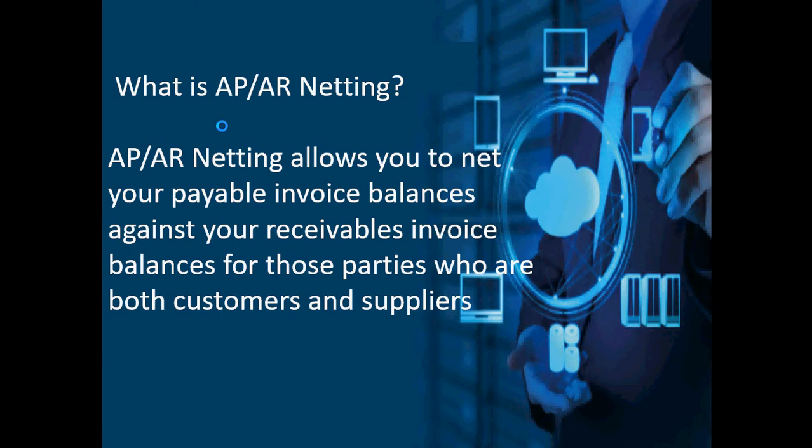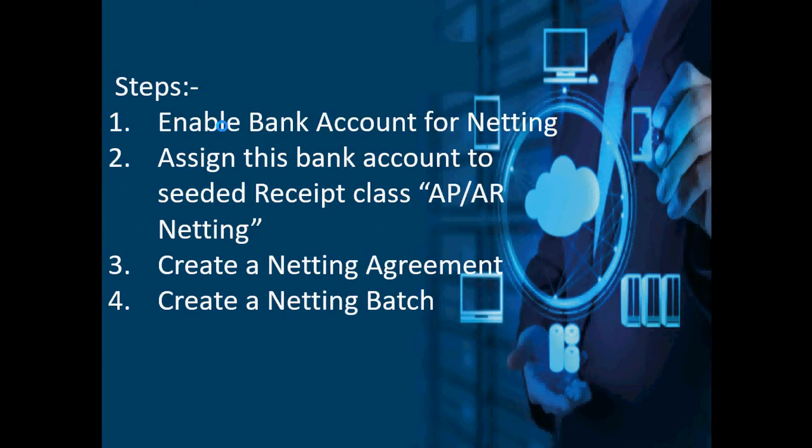There are a few steps involved in setting up AP AR Netting functionality. First, enable your internal bank account for netting purpose. Then assign this bank account to the seeded receipt class 'AP AR Netting'. Next, create a netting agreement specifying who is your supplier and who is your customer. This is followed by creating your netting batch.